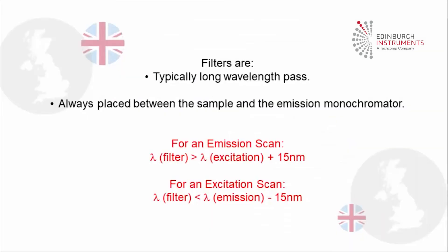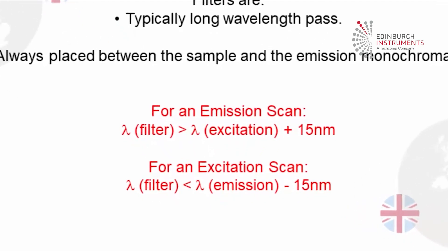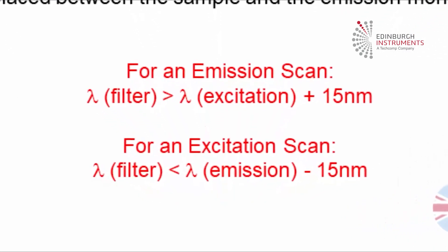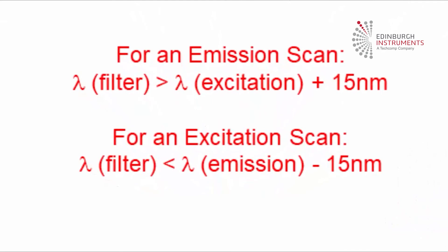The stationary monochromator in each scan defines the wavelength of the filter. For an emission scan, the filter wavelength should be greater than the excitation wavelength plus 15 nanometers. For an excitation scan, the filter wavelength should be less than the emission wavelength minus 15 nanometers. The filter is normally placed between the sample and the emission monochromator.